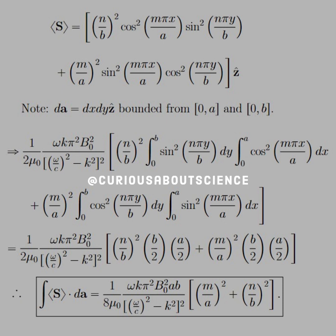And then we have N over B squared times the integral of 0 to B sine squared dy, 0 to A cosine squared dx, and then similarly for M over A squared cosine squared, and so on and so forth.